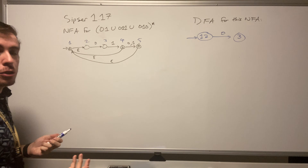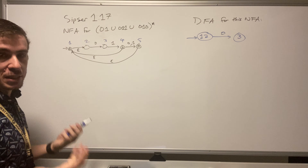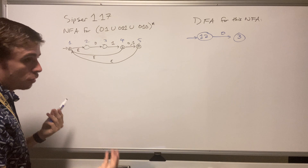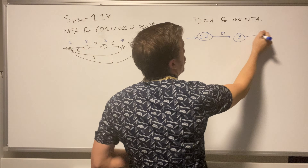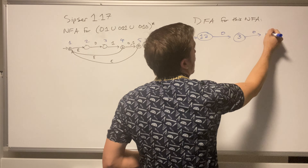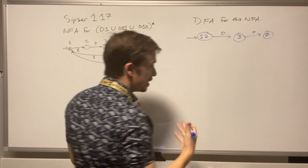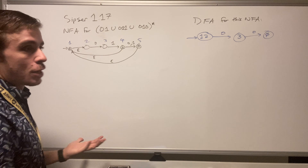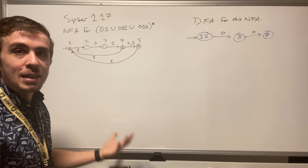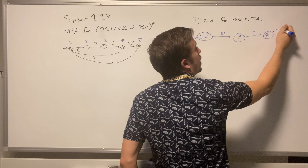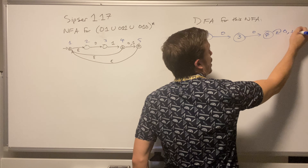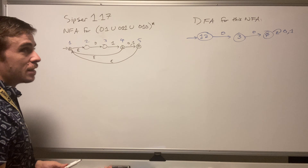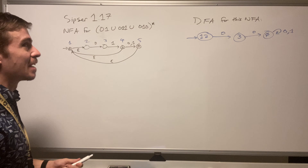If I read a zero in state three, I don't have any state I can go to, so that's referred to as the empty set state — the set of states I can reach is effectively nothing. On a zero or one transition from the empty set state, I stay there, because I'm currently nowhere and reading a character won't get me somewhere.